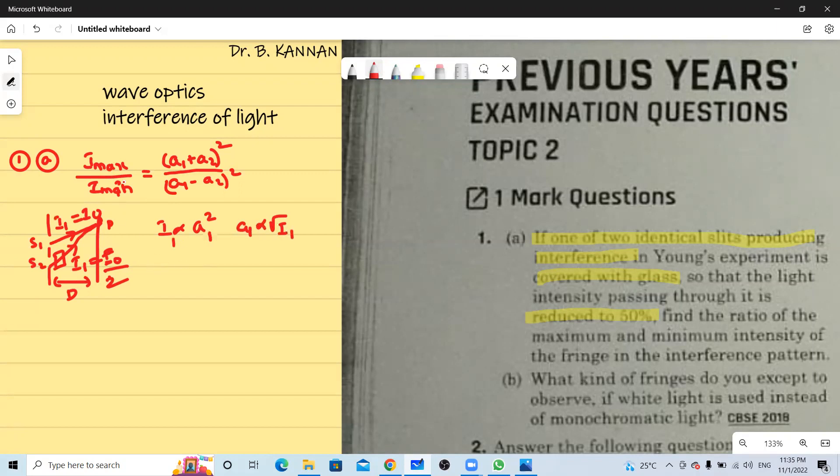Therefore in this formula I maximum divided by I minimum will be root I1 plus root I2 the whole square by root I1 minus root I2 the whole square.